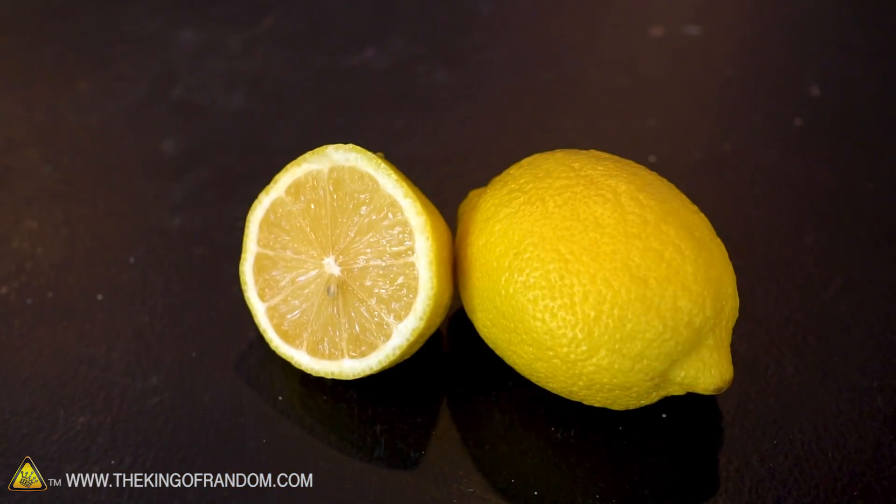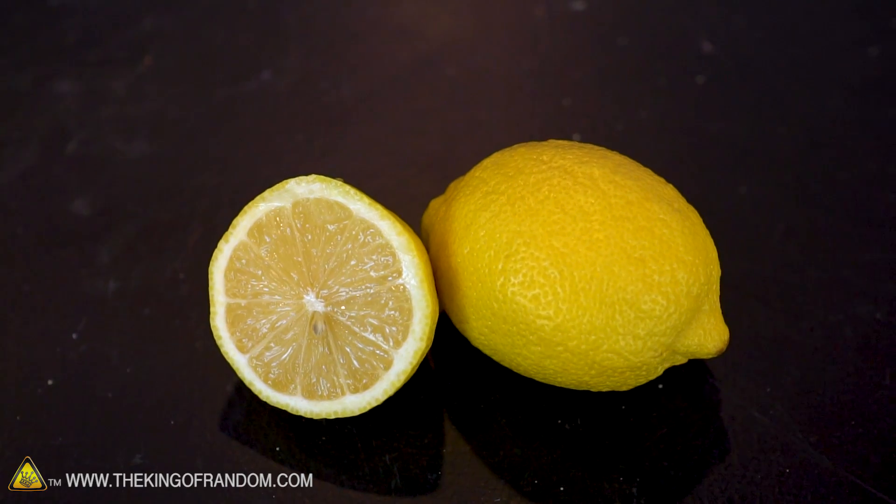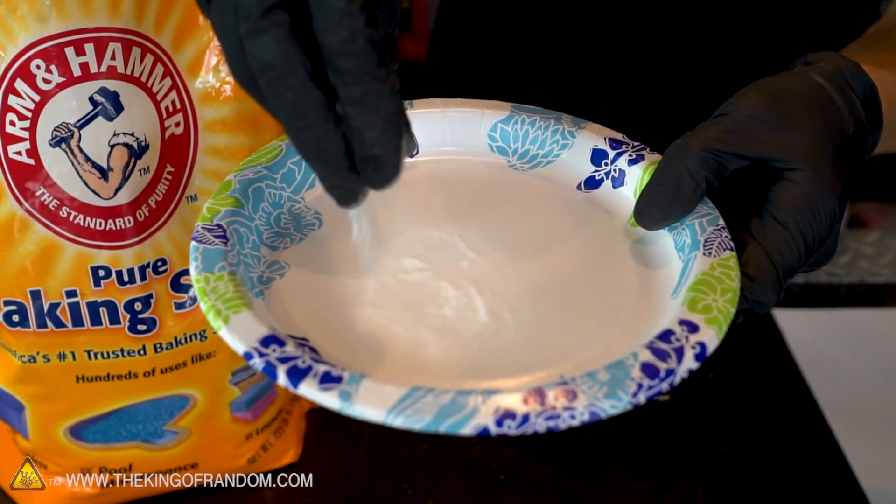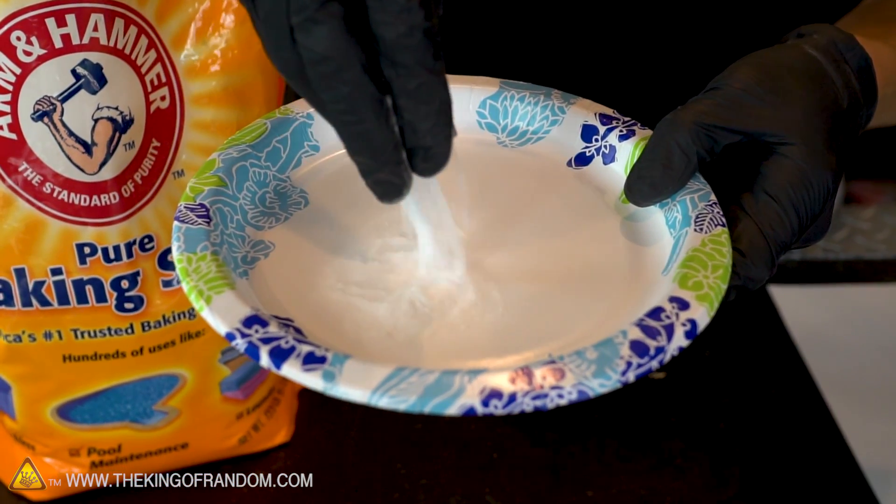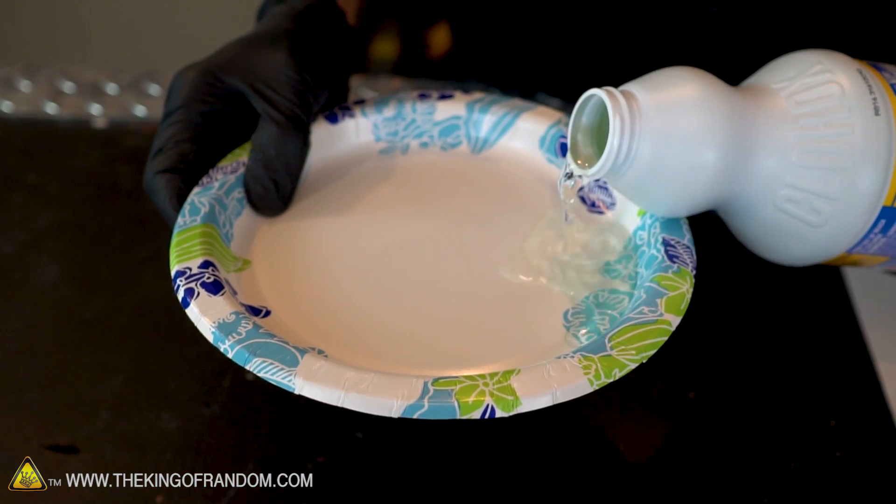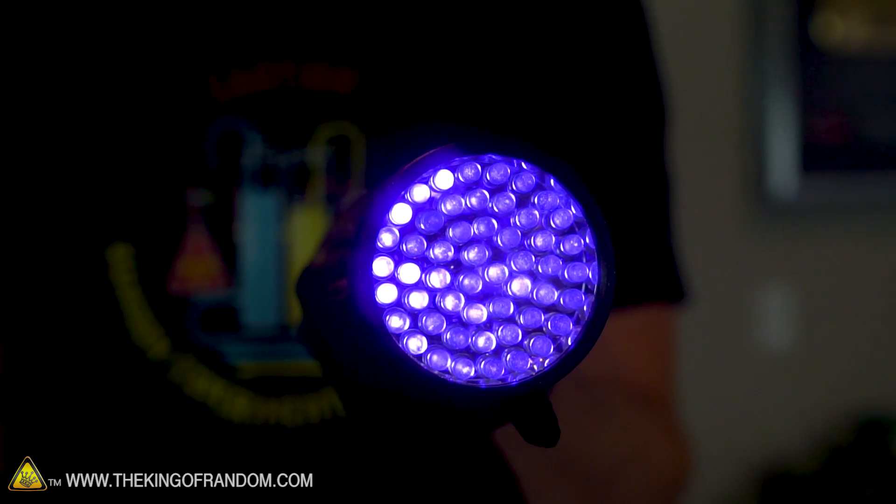The first type of invisible ink we'll try is lemon juice, which is invisible until you hold it over a heat source. The second is a mixture of baking soda and water, which is supposed to be revealed when you cover it in grape juice. The third experiment is to try and use bleach as an ink and see if it will show up under black light.